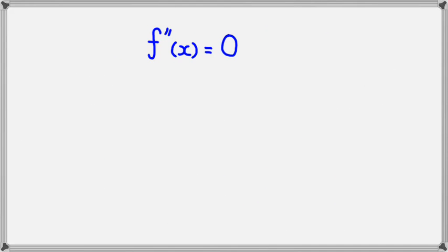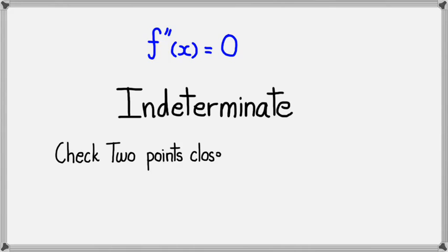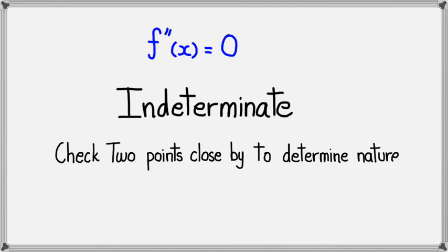Now, just because f''(x) equals 0 doesn't mean it is guaranteed to be a point of inflection. We actually call this indeterminate. What we really need to do is, once we get the points, check two points close by so that we can determine its nature — whether it's actually a point of inflection or a maximum point. So it's best to always check.